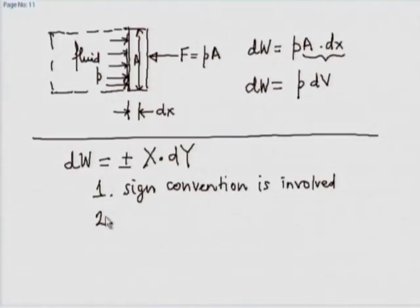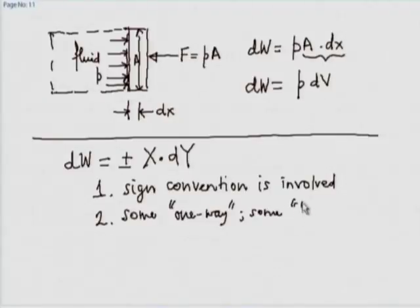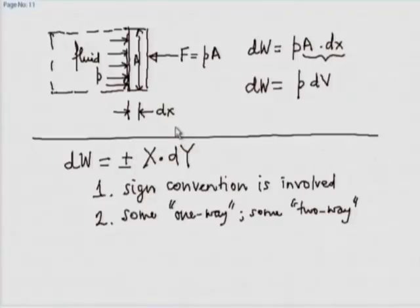We should also notice that some work interactions are one-way, and some work interactions are two-way. For example, take the cylinder-piston illustration. I can relax the piston and let it move slightly out by slightly reducing the force F, so a small movement is possible. Then dx is positive, dV is positive, and dW is positive. But I can also slightly enlarge the force F so the piston compresses inward, in which case dx is negative, dV is negative, and dW is negative. It is a two-way work mode.